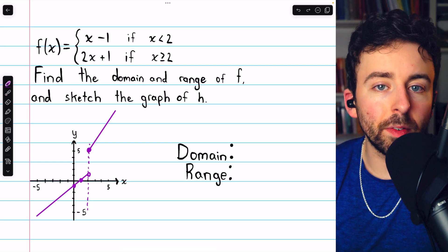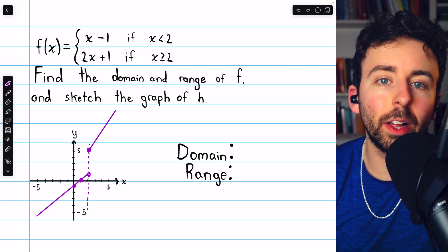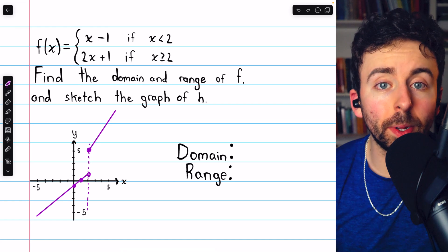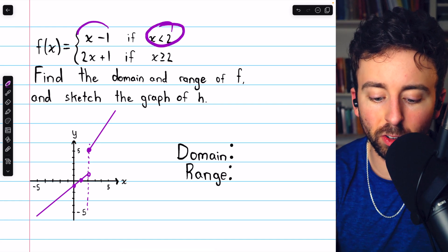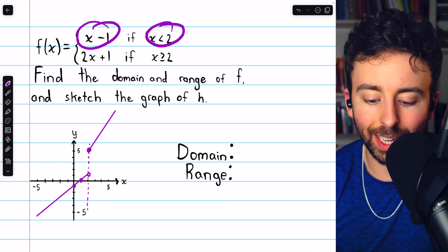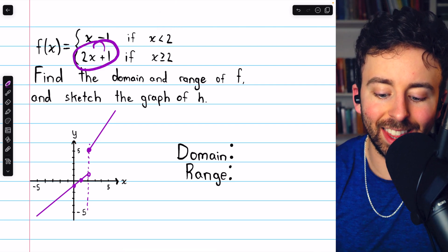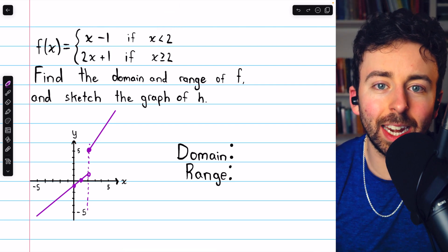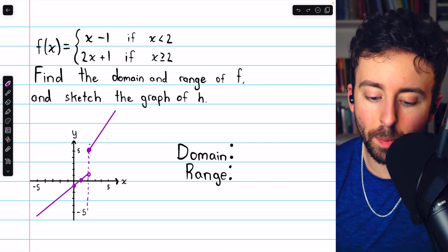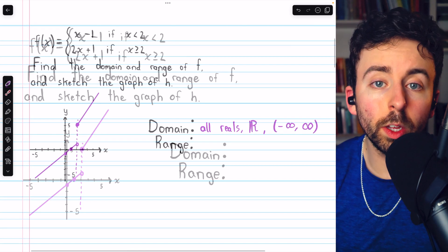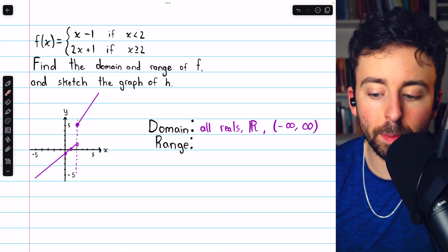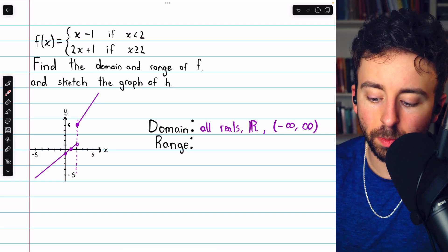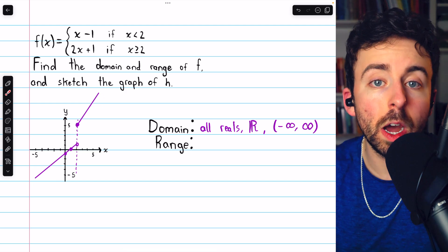What is the domain of this function? Well, what x values can we plug in? We can plug in any x values you like. If you plug in something to the left of 2, the function will act like that. And if you plug in anything else, the function will act like that. We can plug in any x value we like. So the domain is all real numbers. We could write all real numbers in words using this symbol representing the real numbers or with interval notation. Everything from negative infinity to positive infinity.